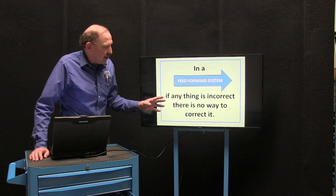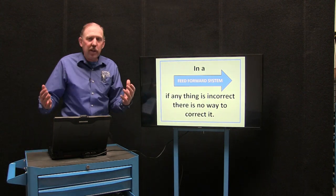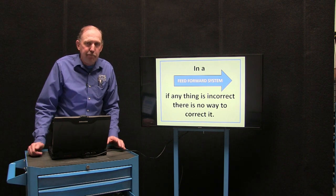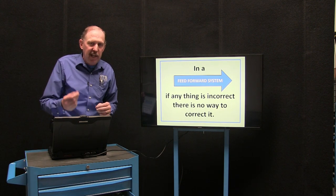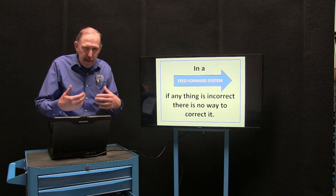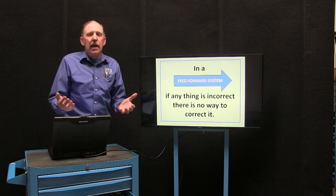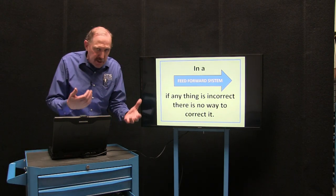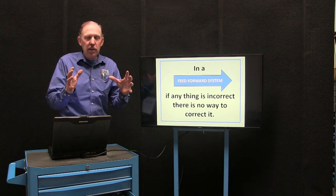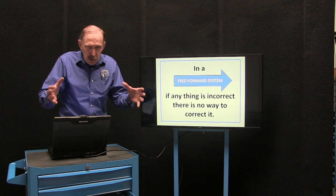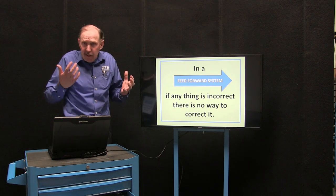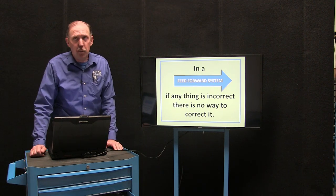In a feed forward system, if anything is incorrect, there's really no way to fix it. We've worked on early Volkswagen Boss systems — in those systems, if the head temperature sensor would fail, the car wouldn't run. It had no way to back up or figure out anything else. If the air door had a problem or there's a leak, it couldn't fix it — there's no feedback. It took the quantity of what it was weighing in air and temperatures, and then gave that fuel. If something went wrong, the car just wouldn't run very well.